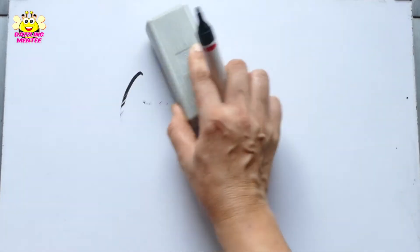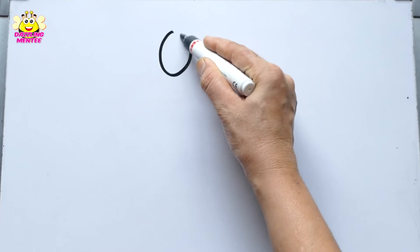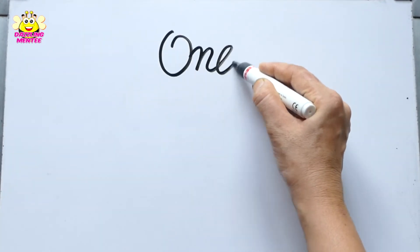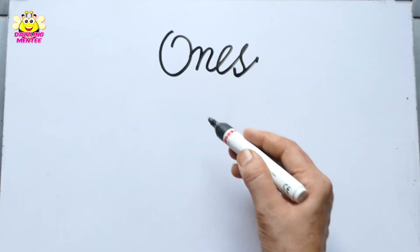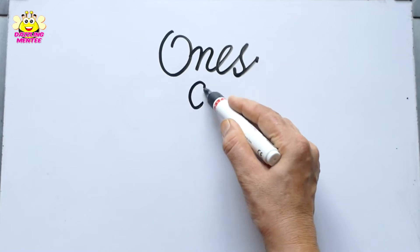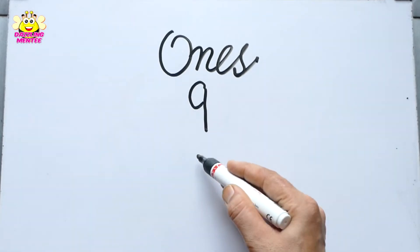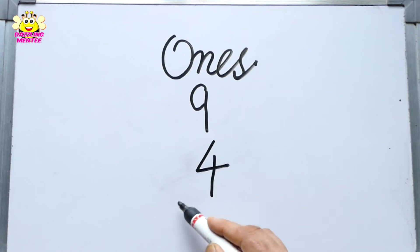First of all, I'll write down the digit in front of you. The digit is ones. The top number is 9 and the bottom number is 4.